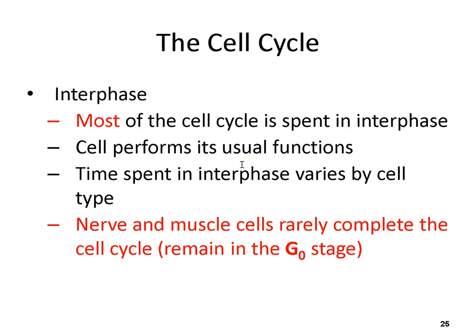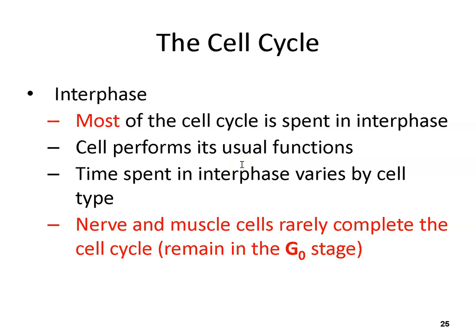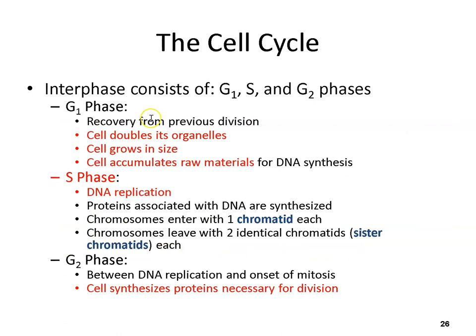Most of the time the cell is in interphase performing its usual functions — its nine-to-five job, doing what it needs to do. Nervous and muscle cells rarely complete the cell cycle — some textbooks say never, though research suggests nerve cells can exit G0 under certain conditions. The three phases of interphase: G1, the cell doubles its organelles, grows in size, and accumulates raw materials. S phase, DNA is replicated — we go from one chromatid to two sister chromatids. G2, the cell synthesizes more proteins and gets ready for mitosis.